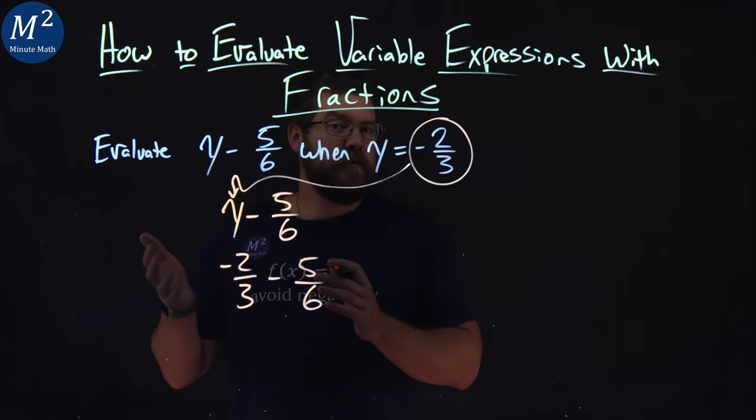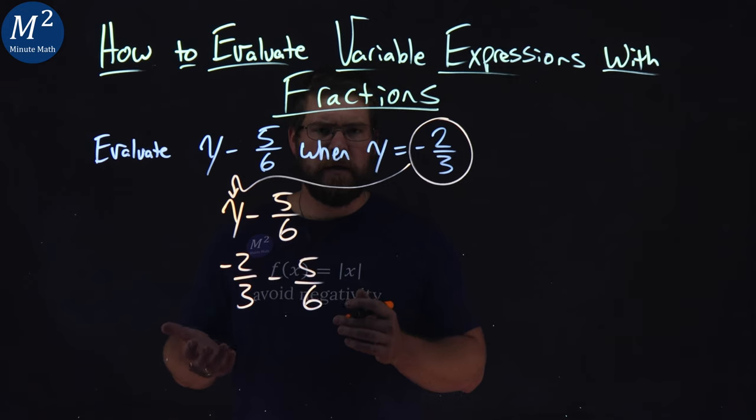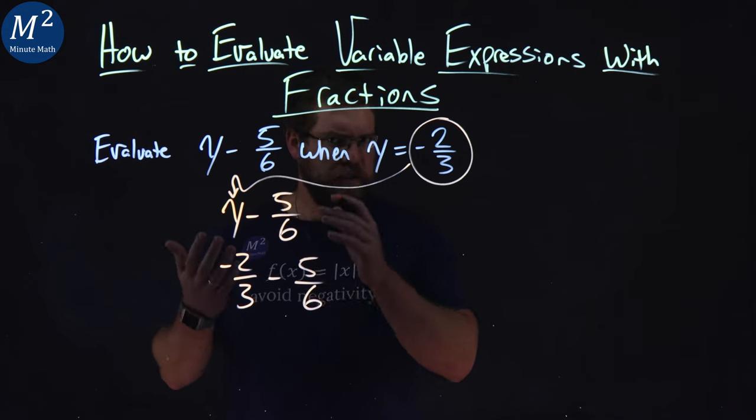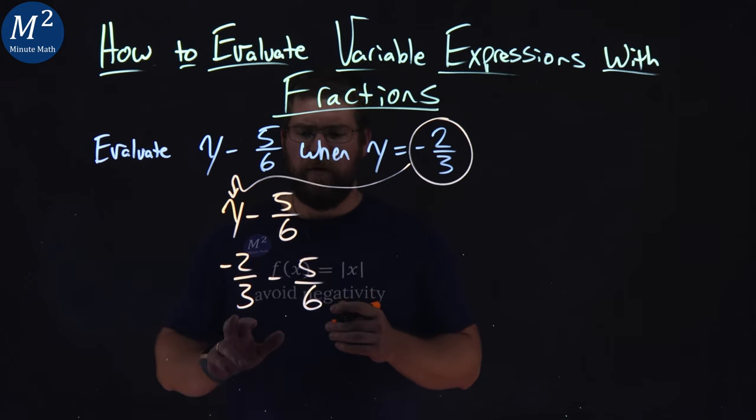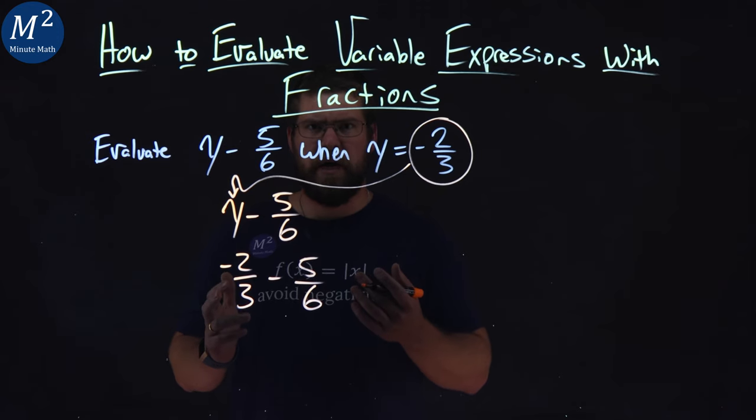We can't subtract these fractions as is. They don't have a common denominator. So we find the LCD, least common denominator. With 3 and 6, that's just 6. 3 times 2 is 6. Not too bad.